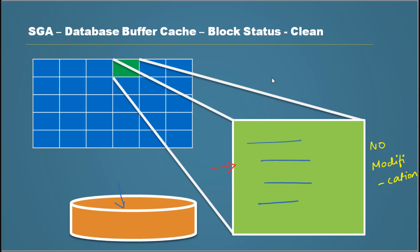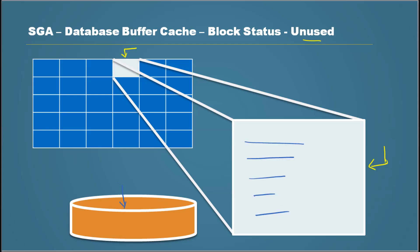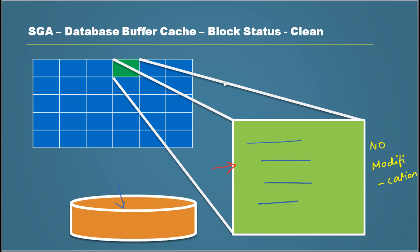So that's the difference between unused and clean. In unused, the block was never used and Oracle can write anything it wants there. Whereas in clean, after the data was written, it never went through any modification — it's just clean. Oracle knows this is consistent data at a certain point in time.